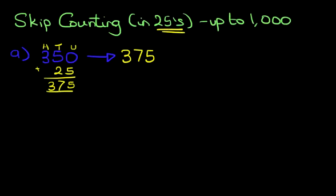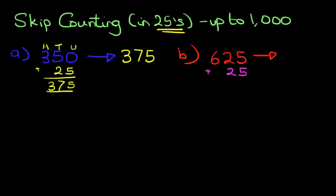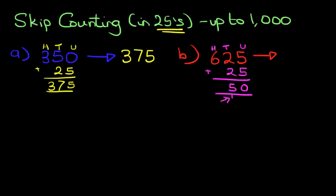Let's work through one more example. This time, we've got the number 625. What number comes after 625 if we are counting in 25s? Well, what we do is we simply add 25. Start with the units — double 5 is 10. Then the tens: 2 plus 2, and don't forget the 1, is 5. And lastly, the hundreds: the answer is 6. So the result is 650.